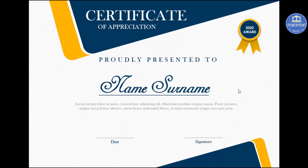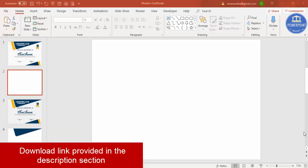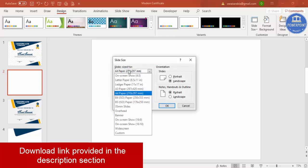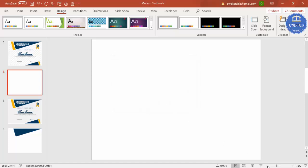To make this certificate I've used two fonts: Baskerville Old Face and Adine Kirnberg. If you don't have these fonts, you can search online and download them for free. Many people ask me why I prefer PowerPoint over Word — for me, making designs in PowerPoint is faster and easier. So let's start: add a new slide, go to the Design menu, select Custom Slide Size, choose A4 paper size, set the orientation to landscape, and click OK.